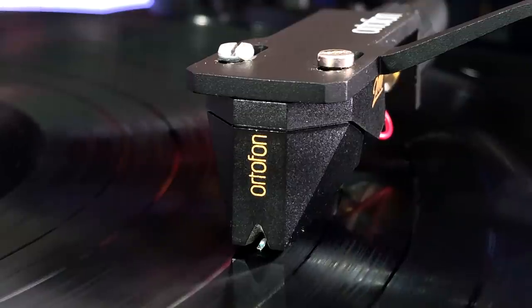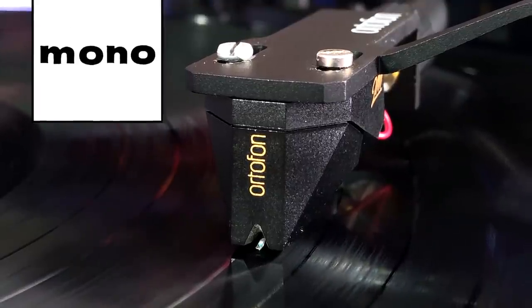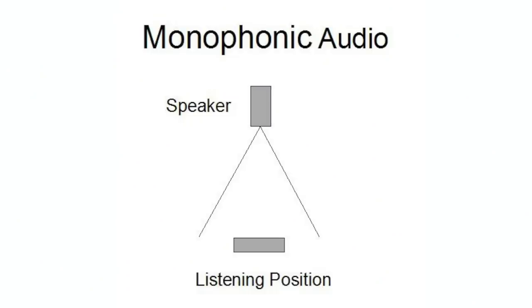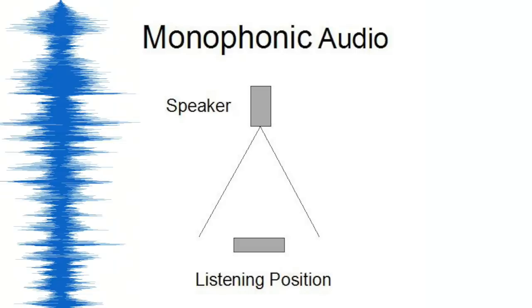To understand where quadraphonic records came from, we first have to look at mono records. Monaural sound, or mono for short, was the very first type of broadcast sound. It used only one audio channel and was meant to be played with one speaker. It was around from about the 1890s to the 1970s. Back then, everything from wax cylinders to radios and gramophones used mono sound. And more specifically, from the 1950s to the 1970s, vinyl records, whether on 12-inch albums or 7-inch singles, were being pressed in mono.